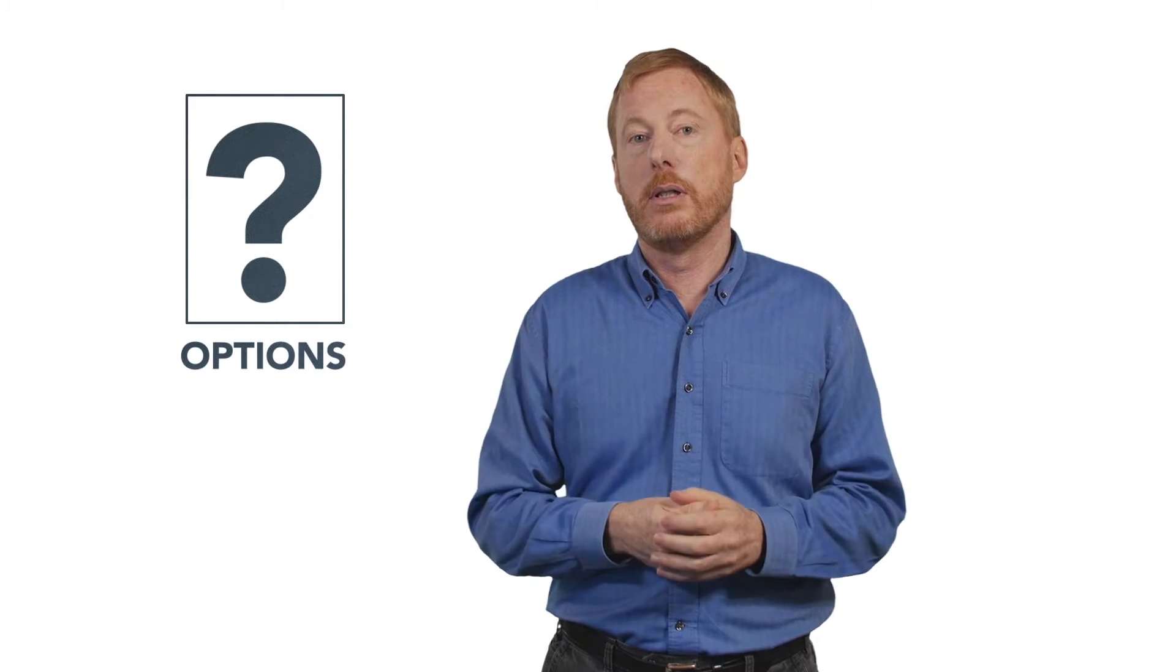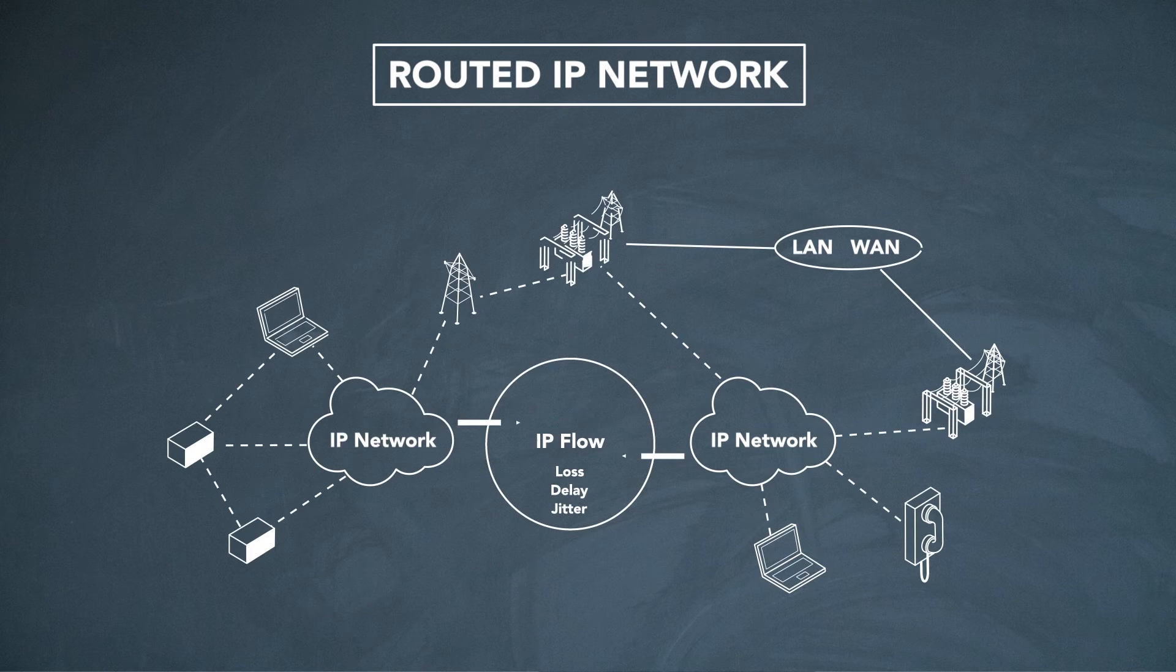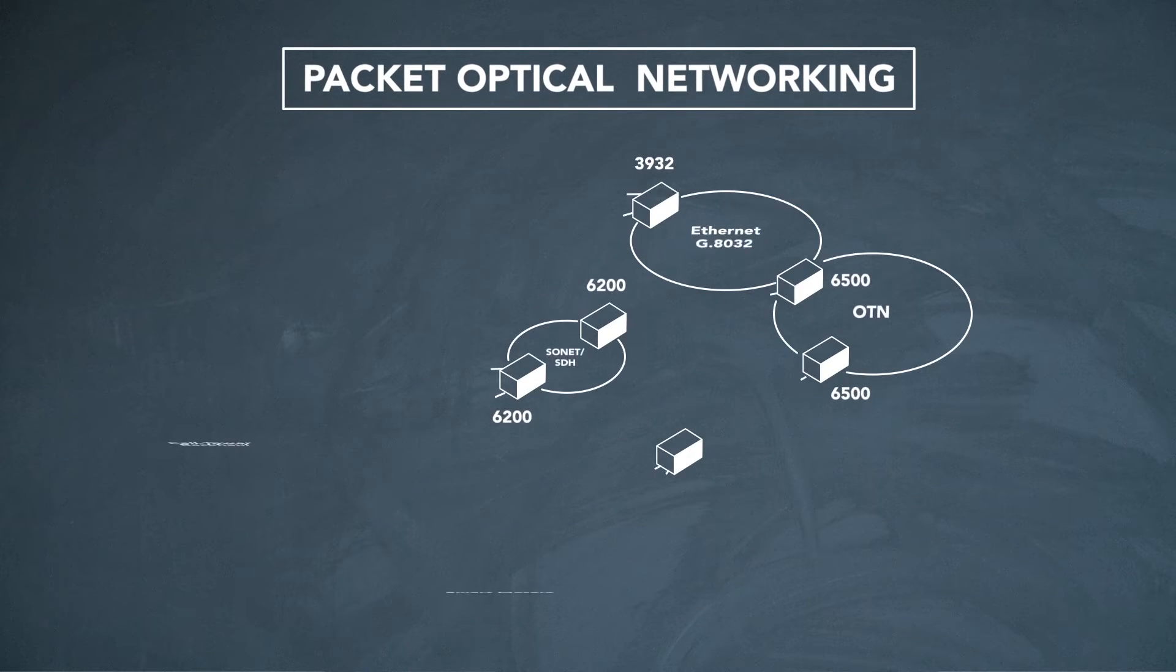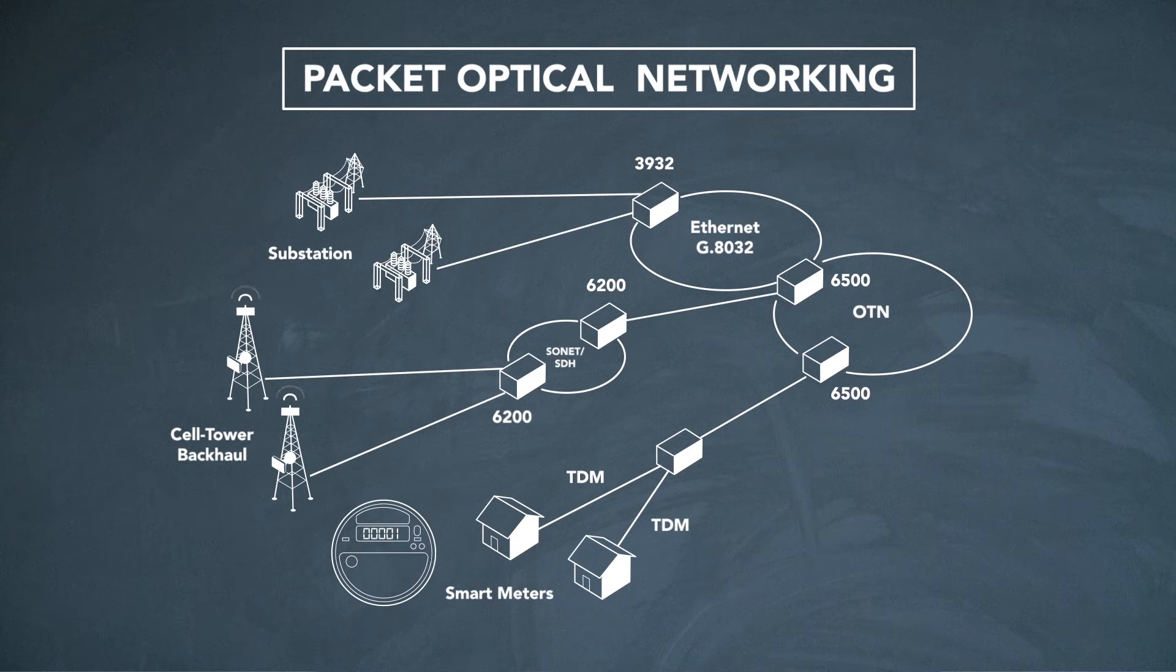So what are the options? Well the default IT approach would be to build a routed IP network. However, there is an alternative that's much more suited to the very demanding requirements of operational grid technologies. And that's packet optical networking.